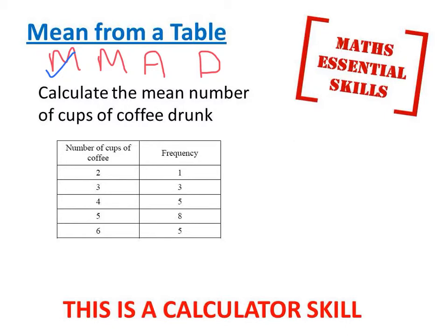Then I will multiply as shown. Now I will add and finally divide. Remember when we divide, we divide by how many things there are. In this case, how many people were there drinking cups of coffee? I need to add up the frequency column. There are 22 people in this question.